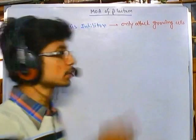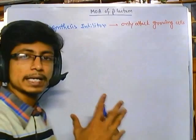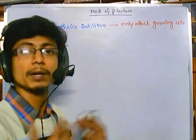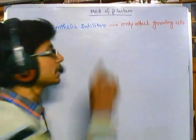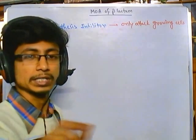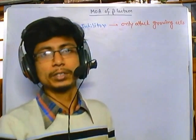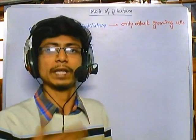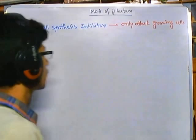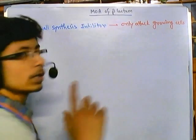Because beta-lactam antibiotics interfere with the synthesis part, if the peptidoglycan layer or cell wall layer is already completely synthesized, these antibiotics will not work. So note it down: they will not work on matured cells, but they will work on developing or growing cells. That's very important. They interfere with the cell wall synthesis.